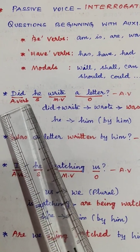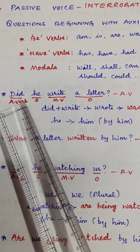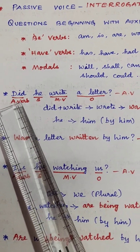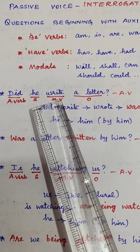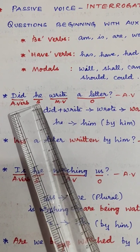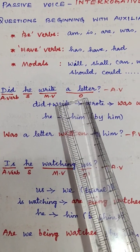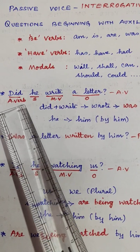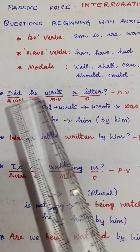Example: 'Did he write a letter?' — 'Did' is the auxiliary verb, 'write' is the main verb. 'He' is the subject, 'a letter' is the object. This is the auxiliary verb and main verb identified.